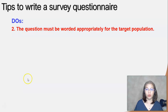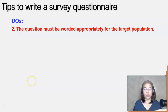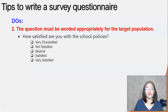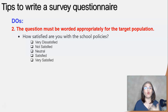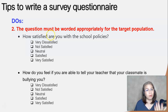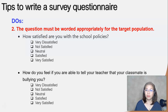The question must be worded appropriately for the target population. You will have a different approach when asking an adult respondent compared to an elementary or high school student. For example, 'How satisfied are you with school policies?' is applicable for an adult respondent. But if you are asking an elementary school pupil who does not know about school policies, you would reword it to something like: 'How do you feel if you are able to tell your teacher that your classmate is bullying you?' with options: Very dissatisfied, Not satisfied, Neutral, Satisfied, Very satisfied.